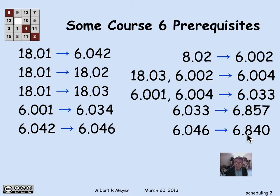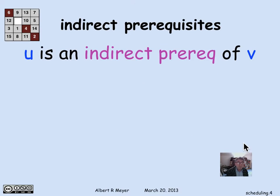and 6.042 of 6.046, and 6.046 of 6.840. So we're seeing here this indirect prerequisite issue that I mentioned before, which is that even though the only thing listed as a prerequisite for 6.840 in the catalog is 6.046, as a matter of fact, in order to take 6.046, you have to have taken 6.042.